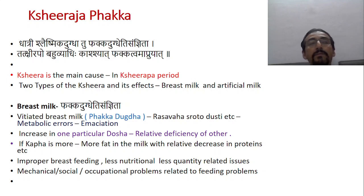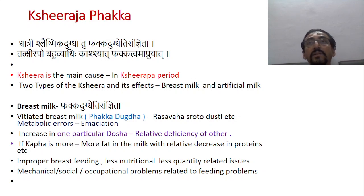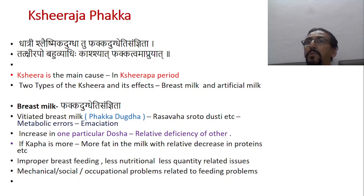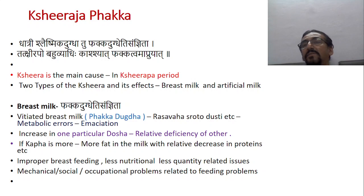Vitiated breast milk — fakka dugdha. Stanya is an upadhatu of rasa dhatu. Rasa dhatu is produced from ahar rasa. So if stanya dushti is there in the mother, there is also rasa vaha sroto dushti and some problem related to food — ahar may be qualitatively and quantitatively less. Rasa dhatu produced in the mother may be qualitatively and quantitatively less; stanya produced is also qualitatively and quantitatively less. This suggests there are metabolic errors taking place in the body of the mother, as a result she is not able to produce good milk.